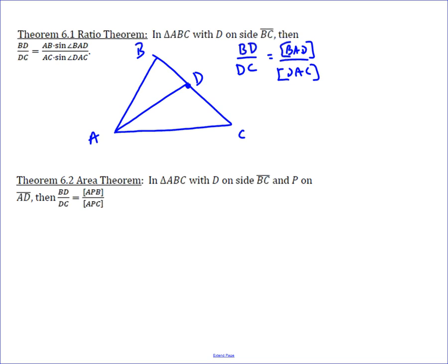Then we can also, and we'll call this X and Y for now, just to make it easier, but it's angle BAD and angle DAC. We can also calculate the area of these two.